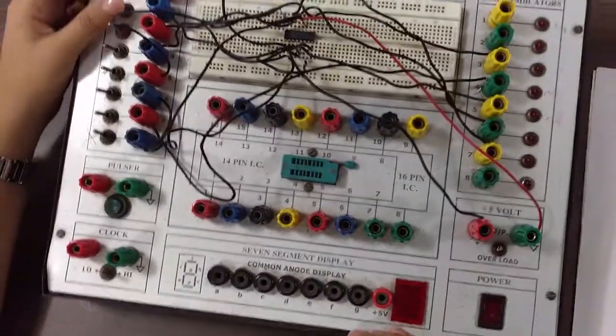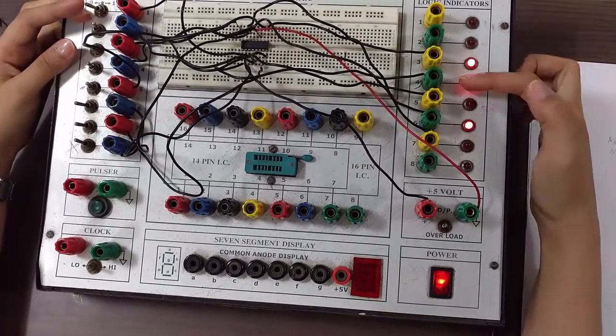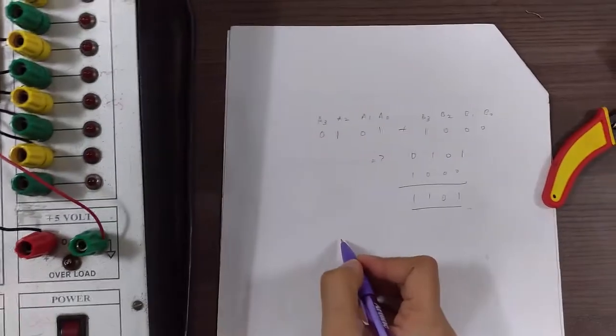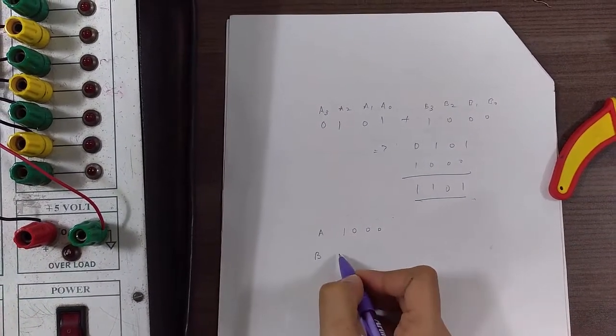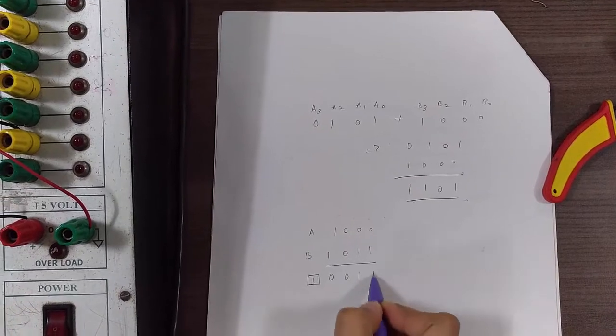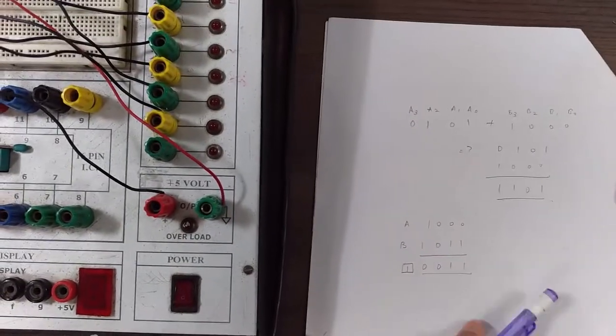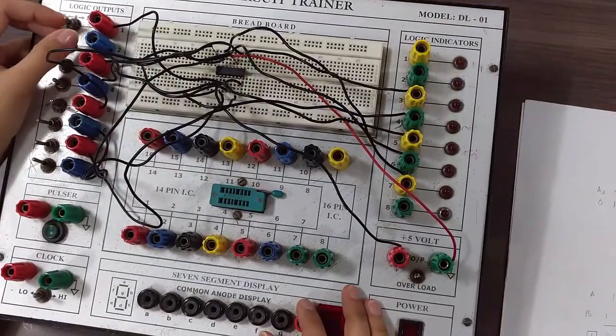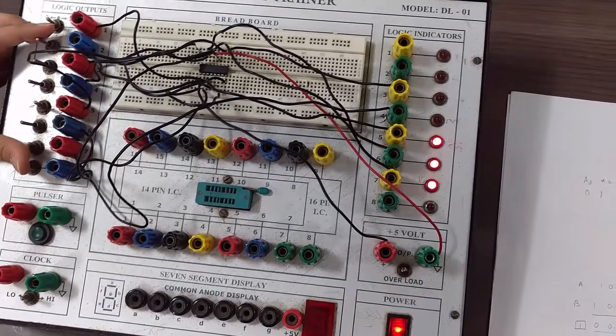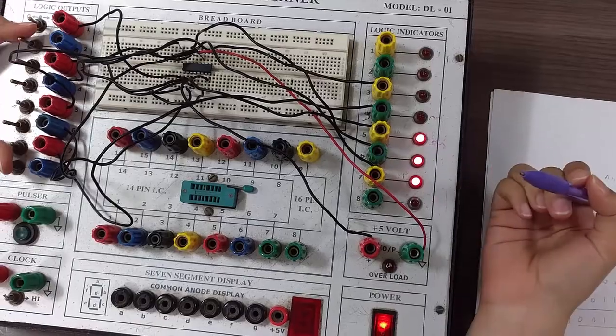Let's check. So we are getting 1101 at the output and carry is 0. Let's check for another input. We need to get this at the output, carry should be 1 and the carry pin is the last one. We are getting carry as 1 and the output is 0011. So the truth table for this is verified.